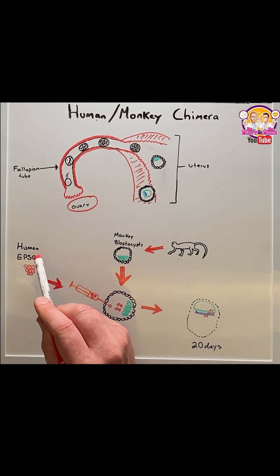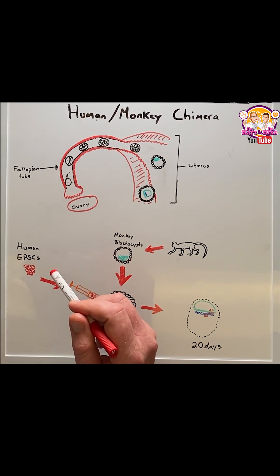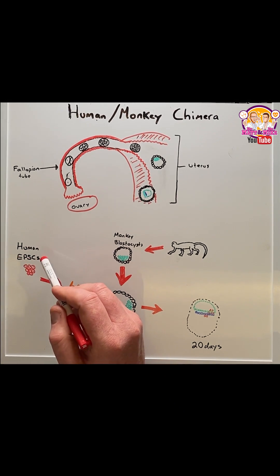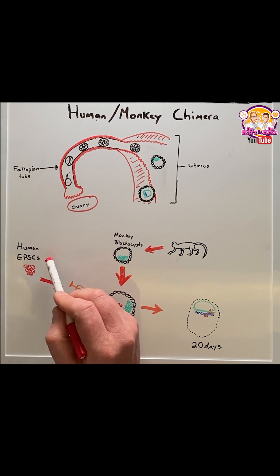From here they then used human extended pluripotent stem cells which they reprogrammed backwards from skin cells into a stem cell-like state.